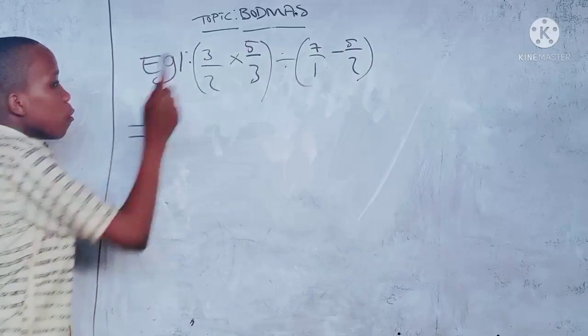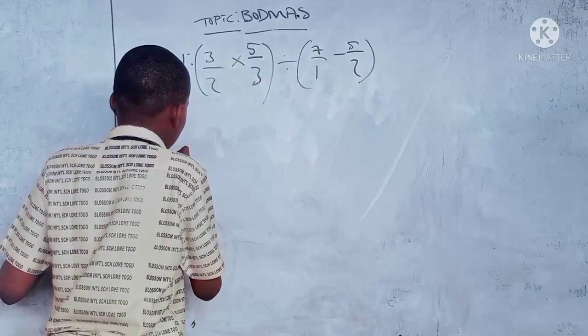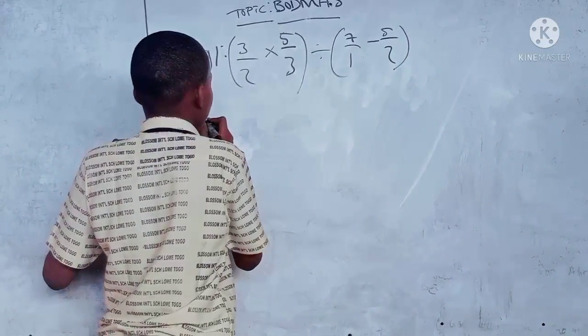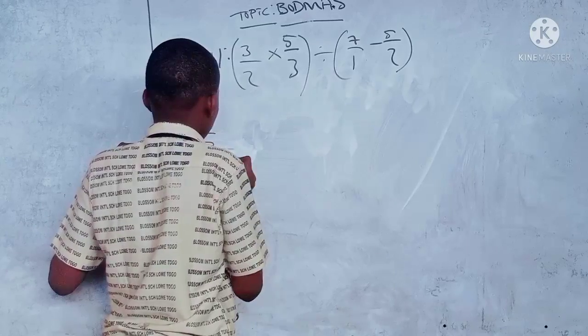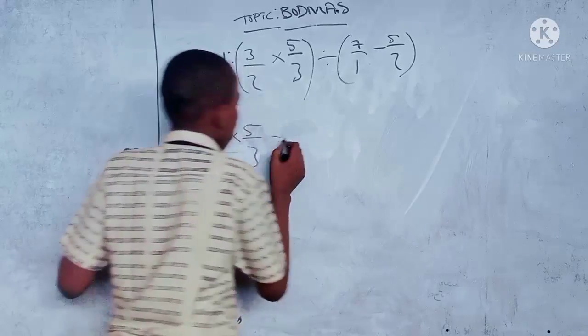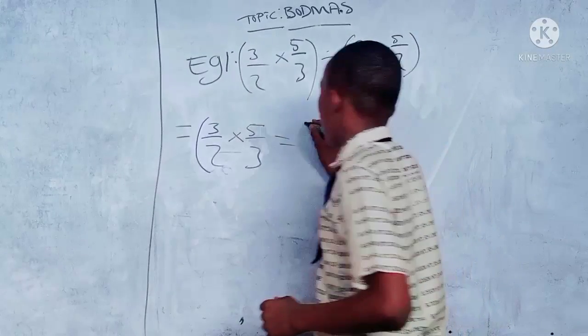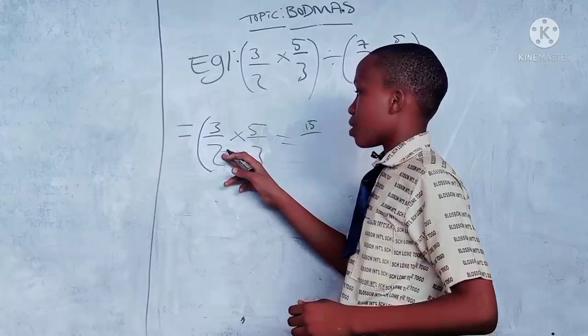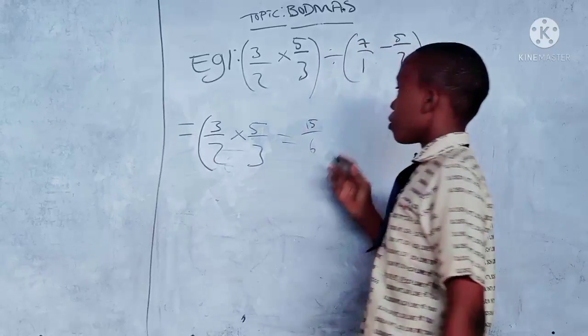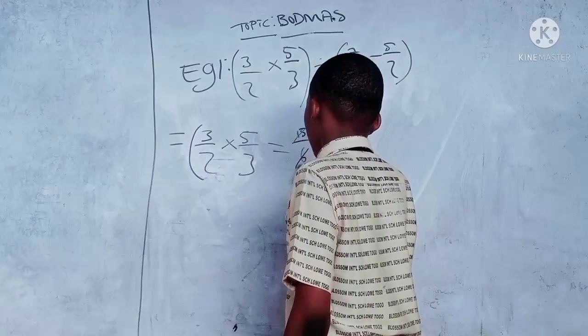LCM of two and three is six. Three over two times five over three equals fifteen over six. Simplifying, three can divide, we get five over two, close bracket.